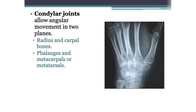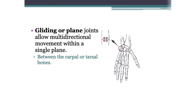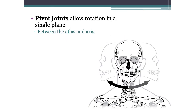Compared to the knee moving in one plane, condylar joints allow two planes. Saddle joints allow for gliding movement between the carpal and metacarpal at the base of the thumb. Gliding or plane joints allow multi-directional movement within a singular plane — they move side to side. Pivot joints allow for rotation in a single plane, such as in the neck, where you can move your head side to side as it pivots.